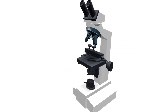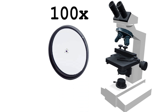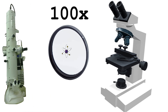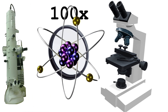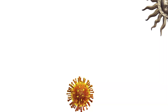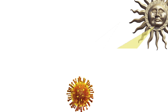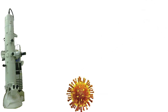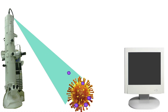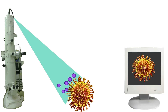But where optical microscopes can only magnify an object to a few hundred times its original size, an SEM has a magnification power of 300,000. Instead of using a beam of light to focus on a specimen, an electron microscope uses — you guessed it — a beam of electrons. This beam traces over the specimen, creating a replica of the object on a monitor.